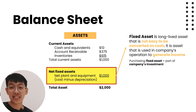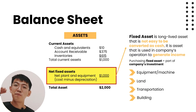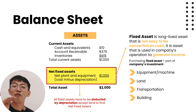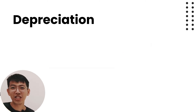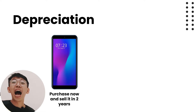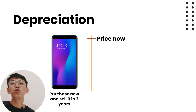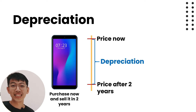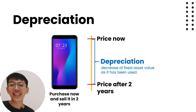Fixed assets are long-lived assets that are not easy to convert to cash — they are used in company operations to generate income, and purchasing them is part of company investment. Examples include equipment, machines, land, transportation, and buildings. All fixed assets in the balance sheet must be deducted by depreciation, except land. Depreciation is the decrease in fixed asset value as it has been used — like a phone you buy today that decreases in value after two years of use.